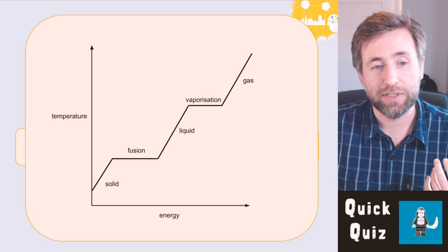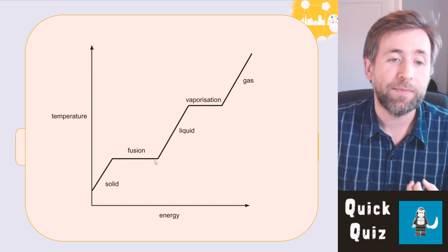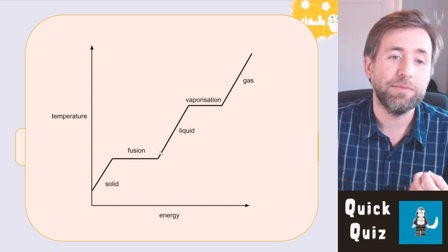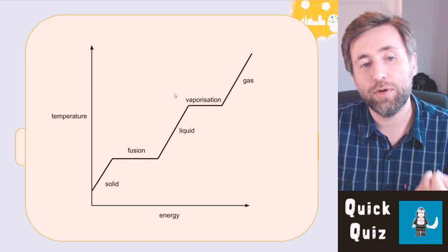In this case, it's melting because the temperature is increasing. We're heating the thing, and then as a liquid, its temperature will rise, and then it will boil at vaporization.